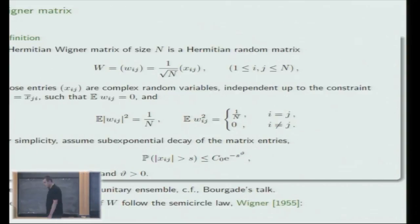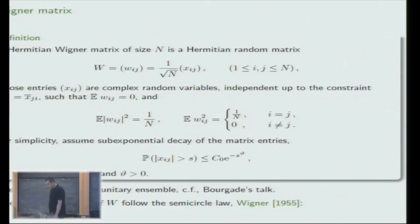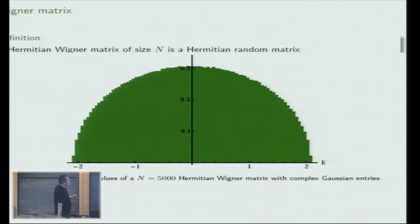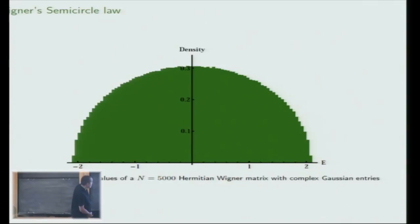A special case of these matrices are the Gaussian unitary matrices Paul was talking about yesterday. Since the work of Wigner, it's well known that the eigenvalues of such matrices follow the semicircle law. For illustration, I have here a histogram of the eigenvalues of such a typical matrix of size N with N equals 5,000.